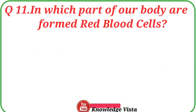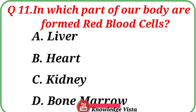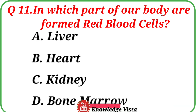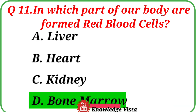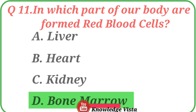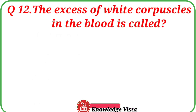Question number 11: In which part of our body are red blood cells formed? Option A: Liver. Option B: Heart. Option C: Kidney. Option D: Bone marrow. The correct answer is option D, Bone marrow. Red blood cells are formed in the bone marrow.